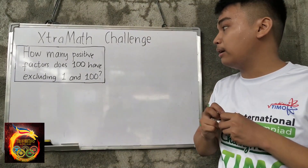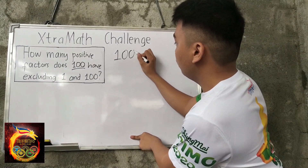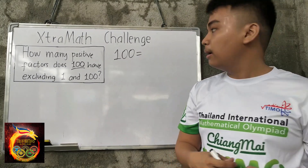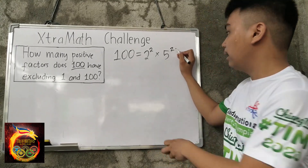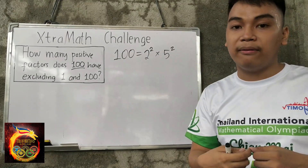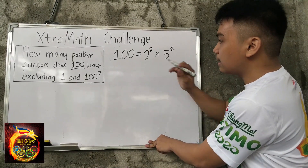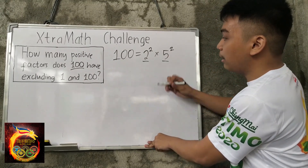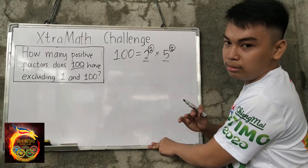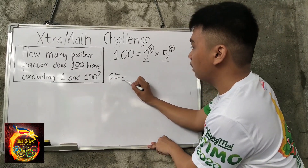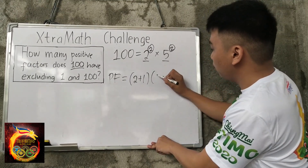Going back to our extra math challenge question: How many positive factors does 100 have, excluding 1 and 100? Our number here is 100. The prime factorization of 100 is 2 squared times 5 squared, because 2 squared is 4 and 5 squared is 25, and 25 times 4 is 100. The distinct prime factors of 100 are 2 and 5, and their exponents are both 2. So the number of positive factors of 100 is (2+1) × (2+1).